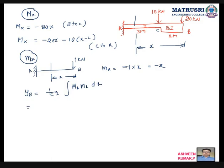So 1 by 2EI, 2EI, integration. What are the limits here? 0, 0 to 2. So 0 to 2. What is Mx here? Minus 20x, minus 20x. Then small mx is minus x, minus x, dx. Plus integration, so now I will go for C to A, C to A.